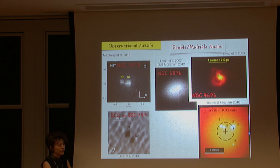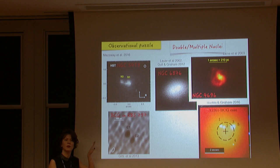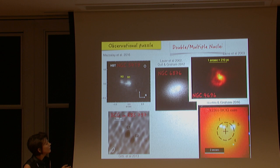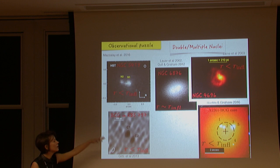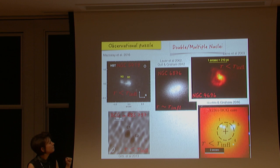All these galaxies share common characteristics. The host galaxy is an early-type bright elliptical galaxy like M87, which means it has a core profile — a flat core at the central part. The second characteristic is that the separation between these nuclei is always greater than the hardening radius of the binary and less than the influence radius of the central supermassive black hole.